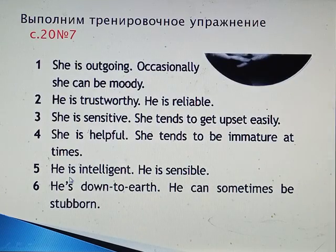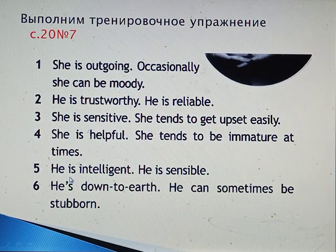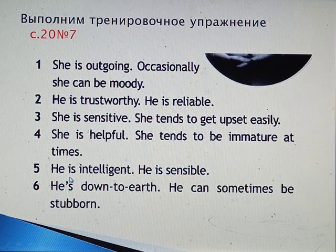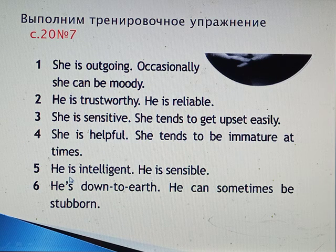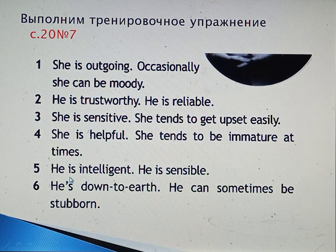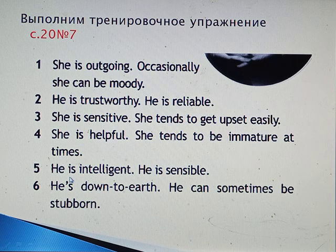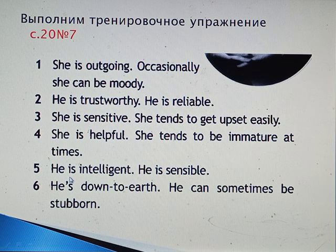Now let's work with some sentences. You can join them using linking words. For example: 'She's outgoing. Occasionally she can be moody.' Outgoing and moody mean quite different qualities, so we are contrasting something: 'She's outgoing; however, occasionally she can be moody.'